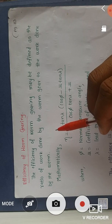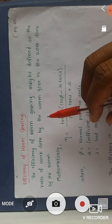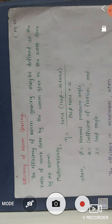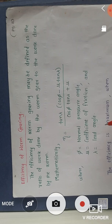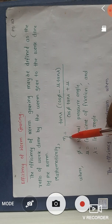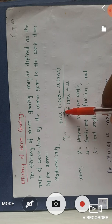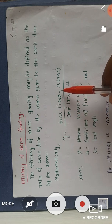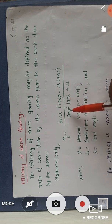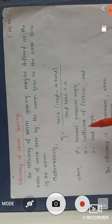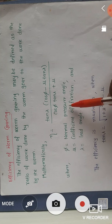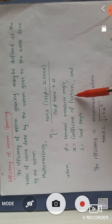Hello students, today we learn about the efficiency of worm gearing. The efficiency of worm gearing may be defined as the ratio of work done by the worm gear to the work done by worm. The mathematical relation is: eta = (tan λ · (cos φ − μ · tan λ)) / (cos φ · tan λ + μ), where φ is the normal pressure angle, μ is the coefficient of friction, and λ is the lead angle.